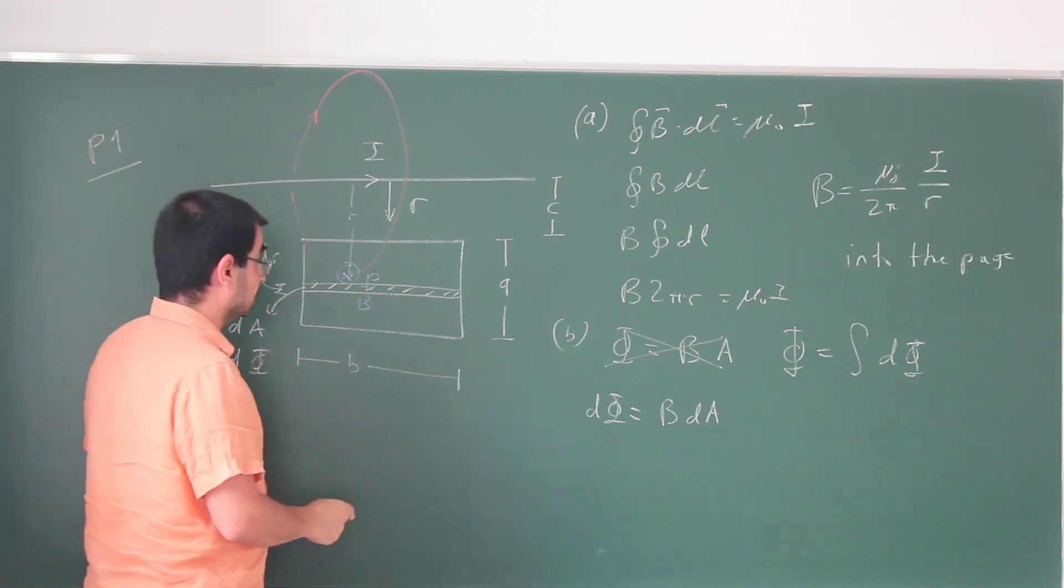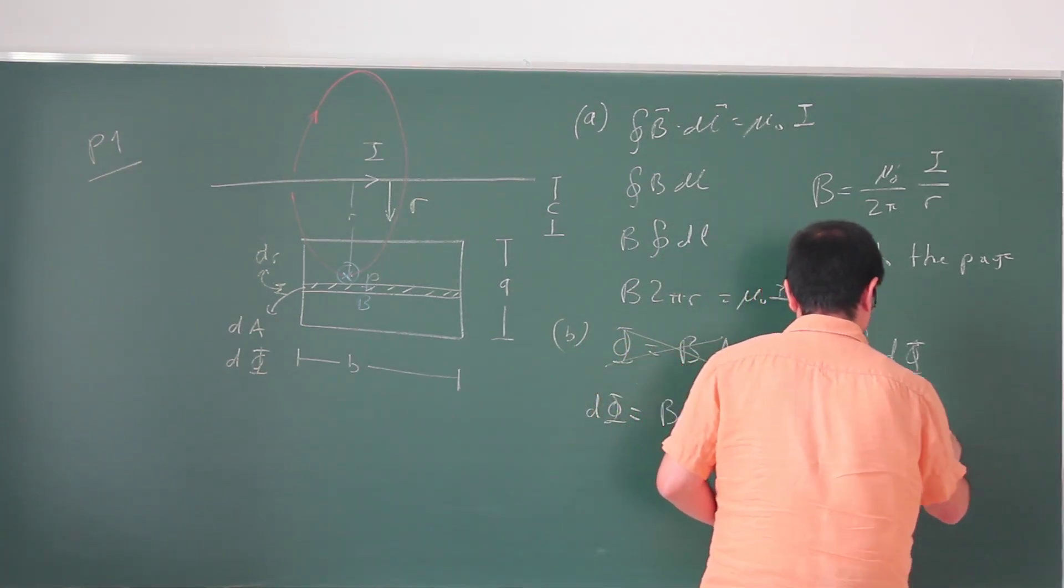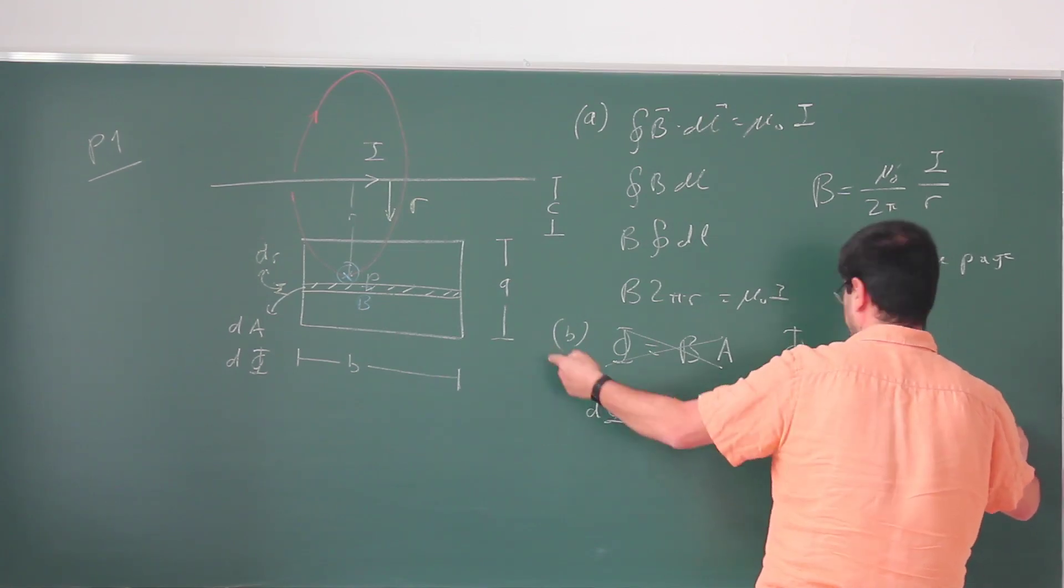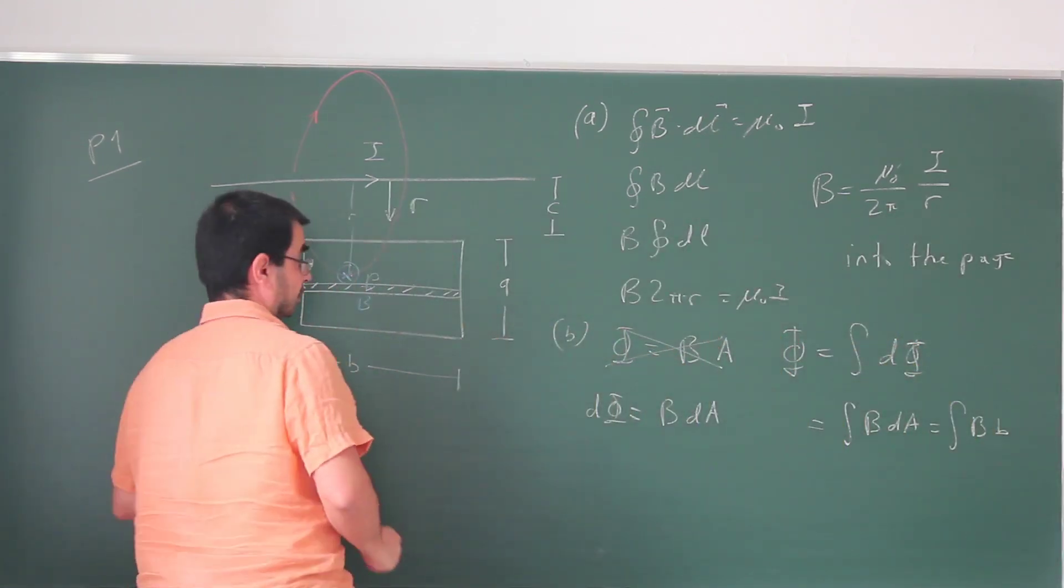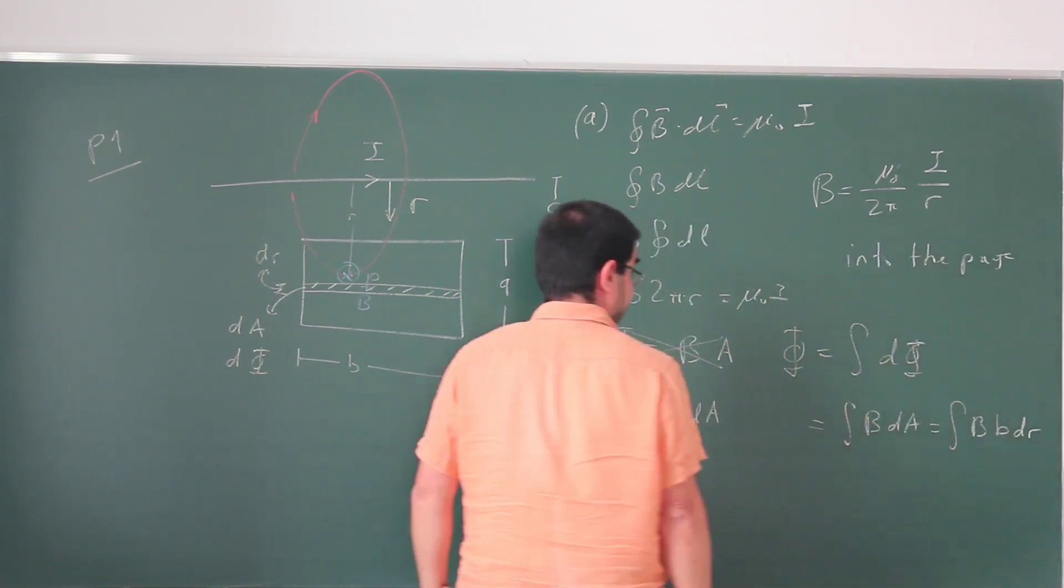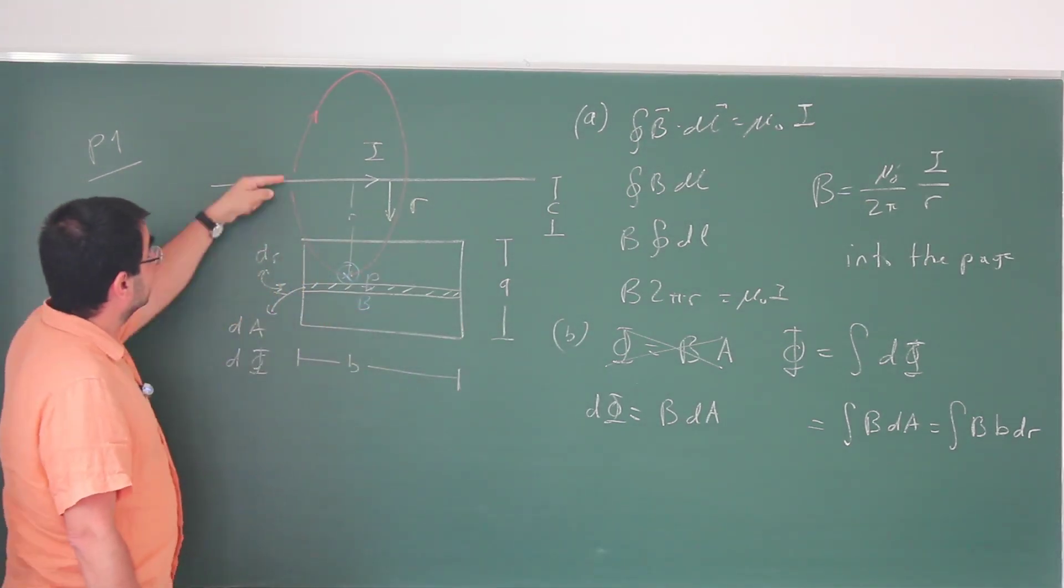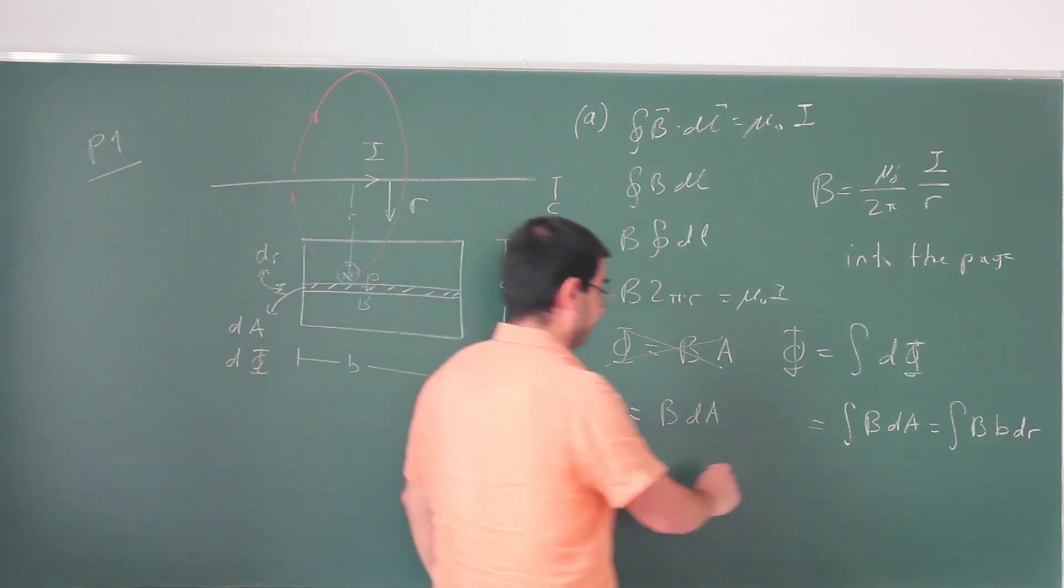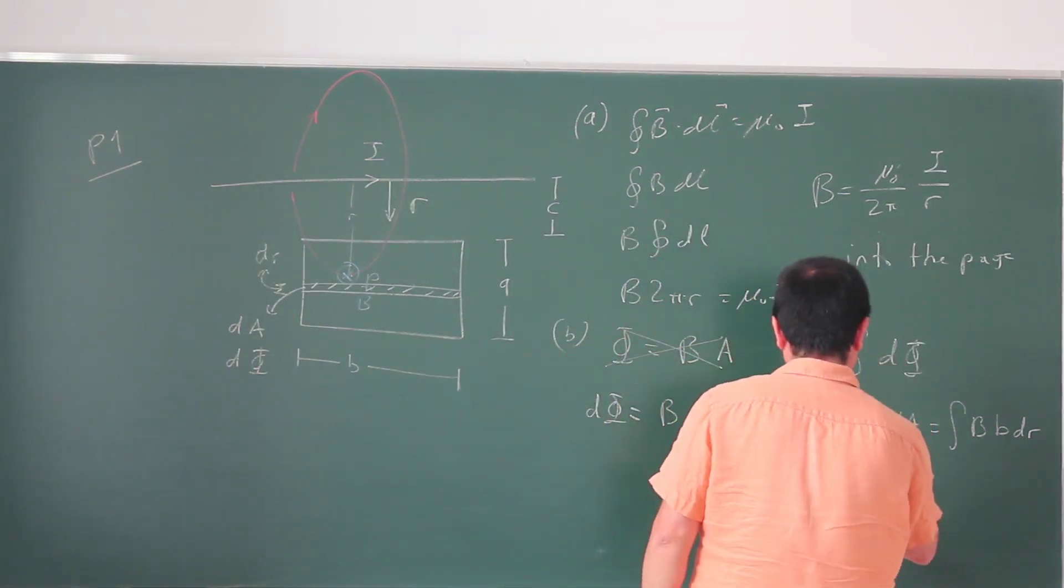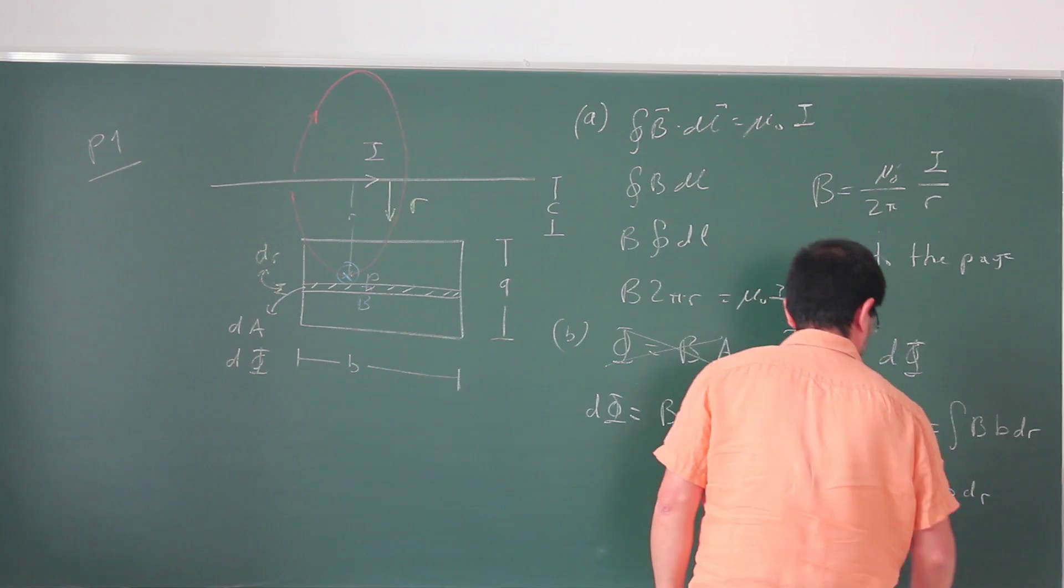So I can write this down: d phi is B dA, so this is B times the length of this strip times the thickness of the strip dR, so B times B dR. That magnetic field is going to be r something dependent on r and so I'll choose my limits of integration as from c to c plus a. This is from c to c plus a, mu naught over 2 pi I over r, B times dR.